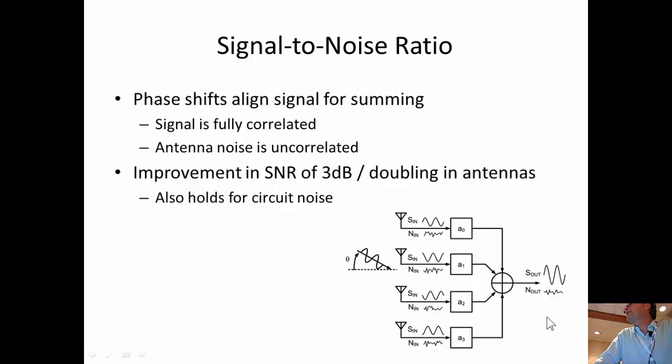So for the wanted signal, the signal is fully correlated. But the antenna noise of all those three or four or five, being so, you have many channels, in this case four, all the noise is uncorrelated. So this is interesting. If you sum it up, then the wanted signals add up, while the unwanted signals are uncorrelated, so they add up quadratically.